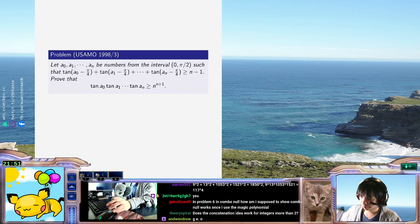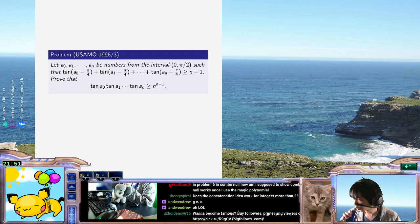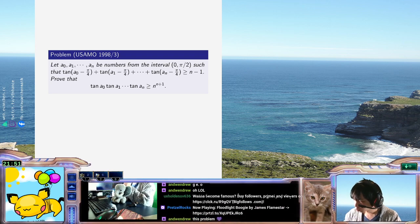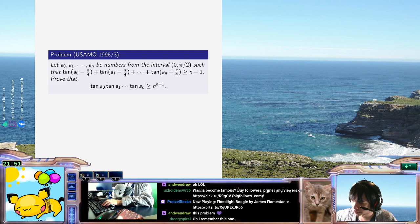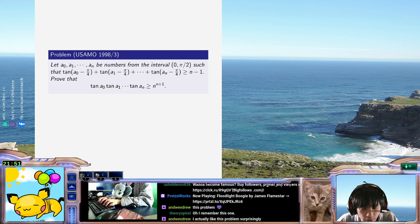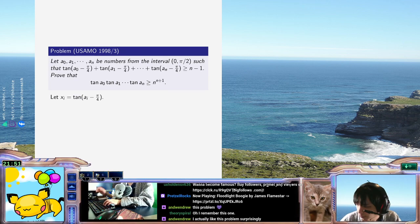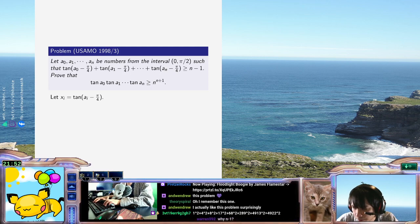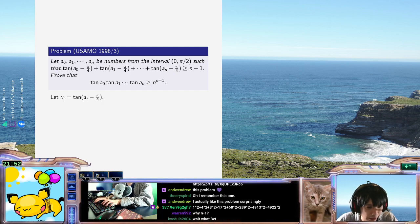All right, so here we are. I should definitely start by letting x_k be tangent of... let's do x_i equal tangent of a_i minus pi over four. So what does that tell you about tangent of a? I don't know, but I want to start by getting rid of the trig.